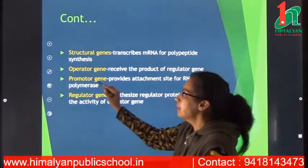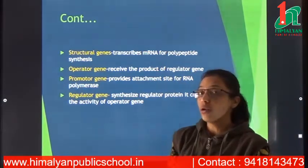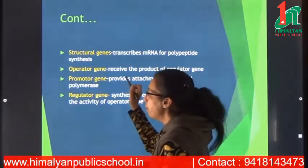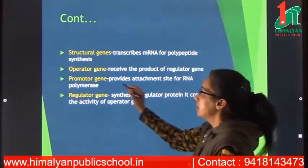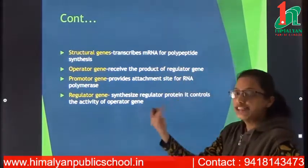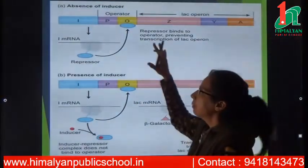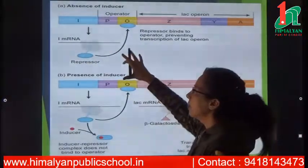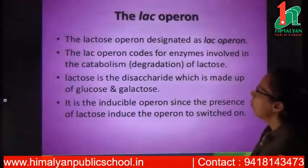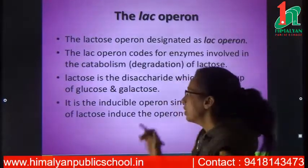The promoter gene provides the attachment site for RNA polymerase. RNA polymerase binds to the promoter gene so that it can synthesize messenger RNA. The lac operon has a promoter gene, an operator gene, and a regulator gene — and the question is how these genes are expressed.